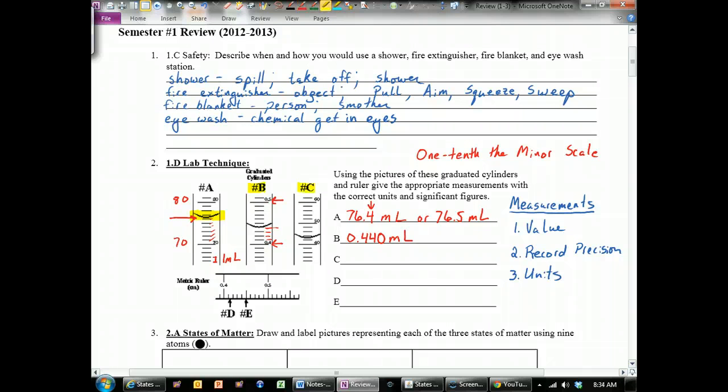C, instrument C, this one you need to pay attention to the markings on this one. We've got 40 down here and 50 up here, but there's only five marks in between. That means the minor scale on this one is 2 milliliters. That means that the distance between any of these two markings represents 2 milliliters in this case.